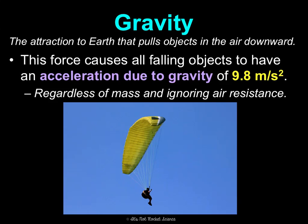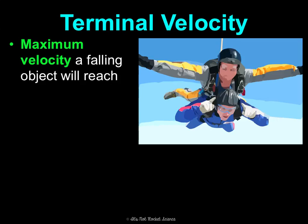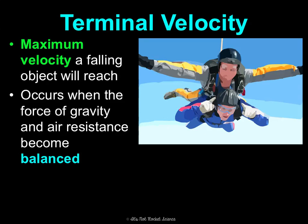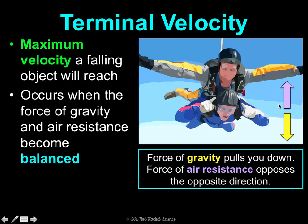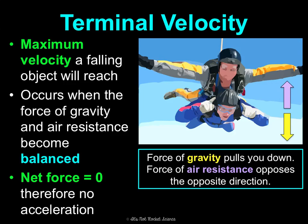Speaking of falling objects, let's talk about terminal velocity. This is the maximum velocity a falling object will reach. It occurs when the force of gravity pulling you downward and the force of air resistance opposing that downward pull become balanced. When air resistance pushes up and gravity pulls down and they balance, the net force is zero, so there's no acceleration and no change in motion. Terminal velocity in humans is 55 meters per second, or about 118.06 miles per hour.